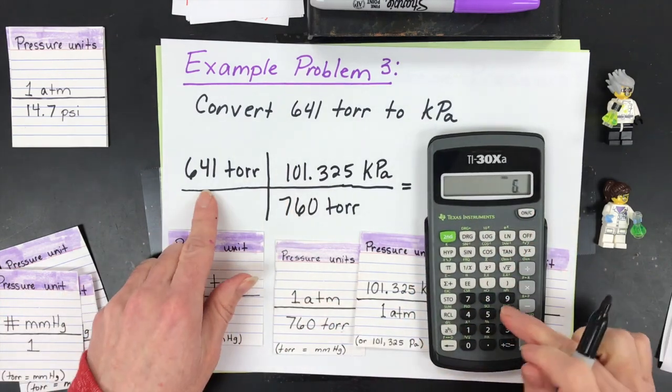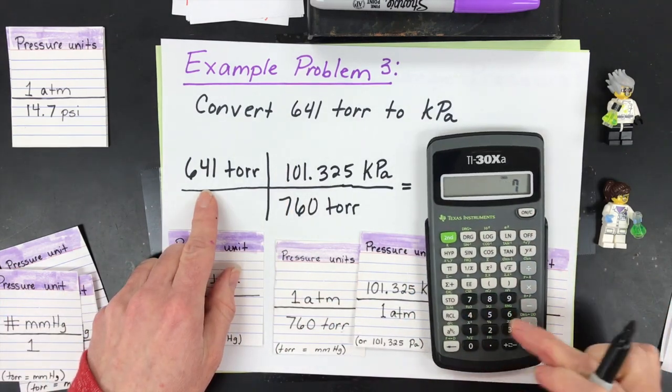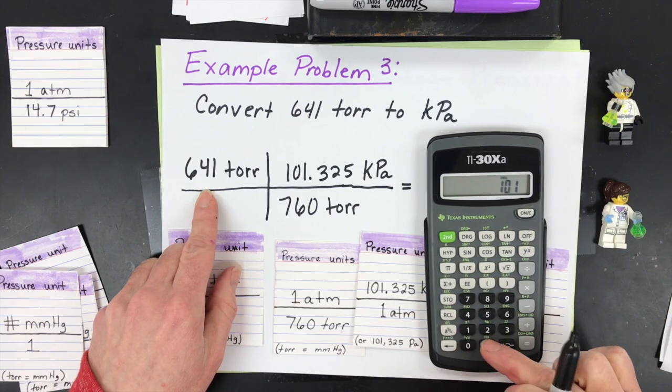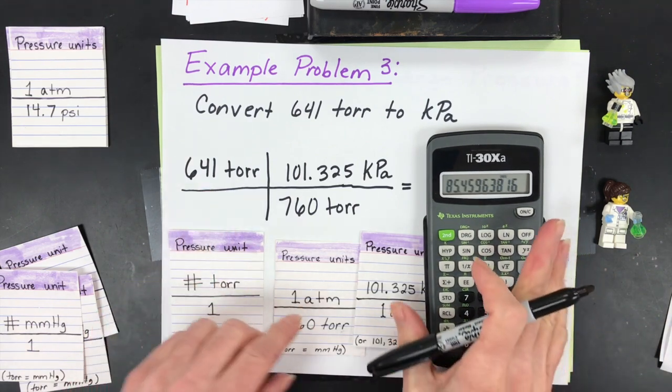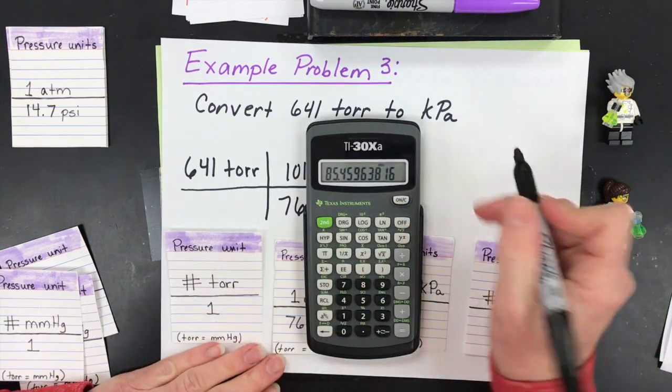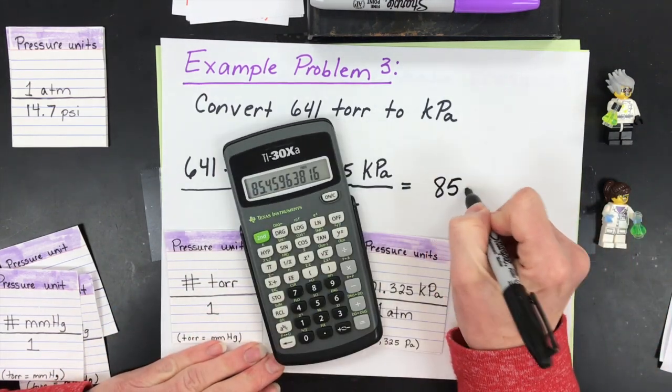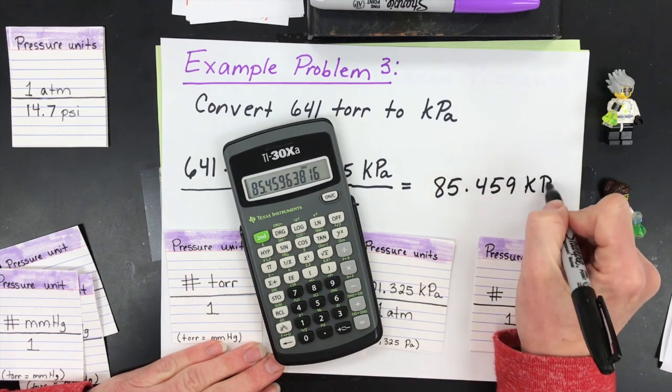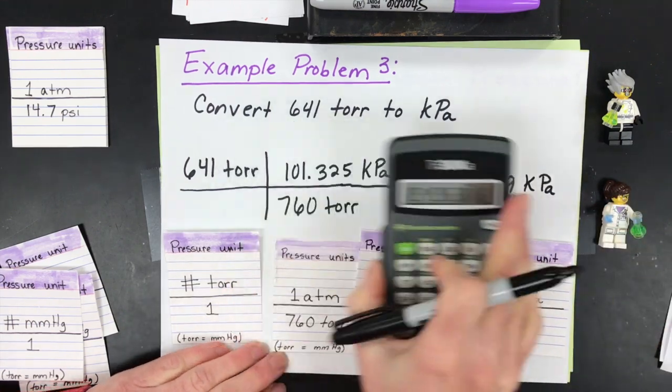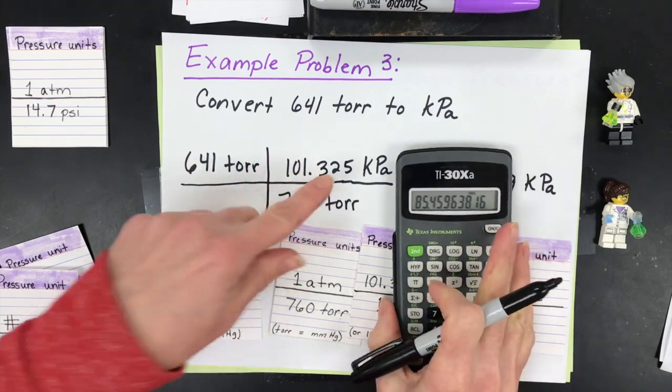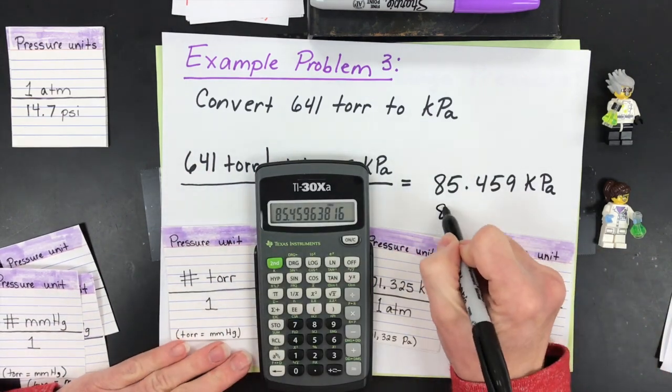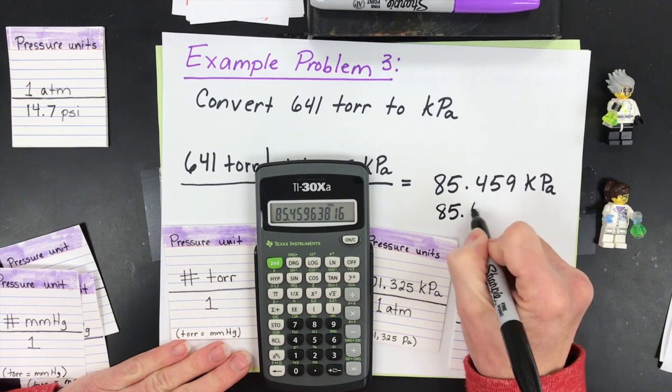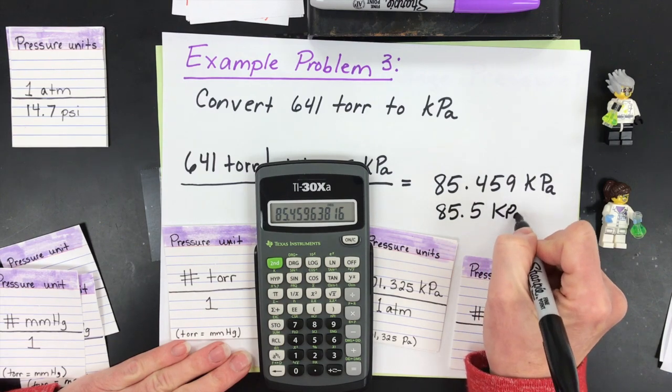We get 85.459 kPa. Again can't keep them all, so how many can we keep? Three sig figs. Don't worry about those conversions, they have more than three. 0.5 we'd have to round up, so that's 85.5 kPa.